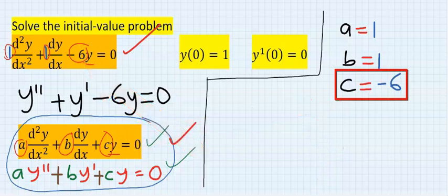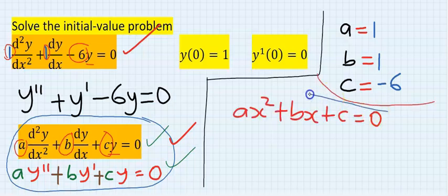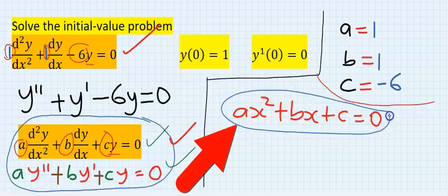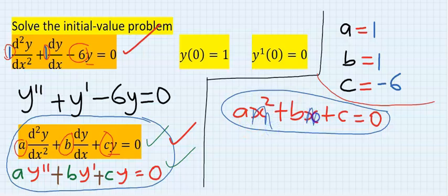Step number three: From the general formula of a quadratic equation, form the characteristic or auxiliary equation of the differential equation. This is the general formula of a quadratic equation. However, instead of using x, we usually use m.